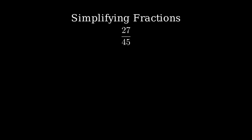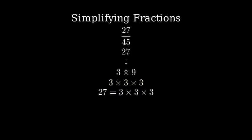Let's start by finding the prime factorization of 27. We can break 27 down into its prime factors by dividing by the smallest prime number that goes into it evenly. 27 divided by 3 equals 9. 9 divided by 3 equals 3. And 3 divided by 3 equals 1. So 27 equals 3 times 3 times 3.